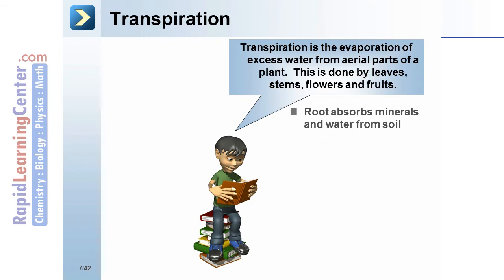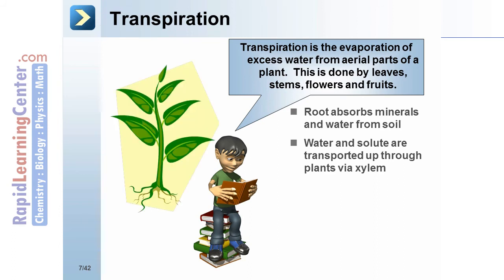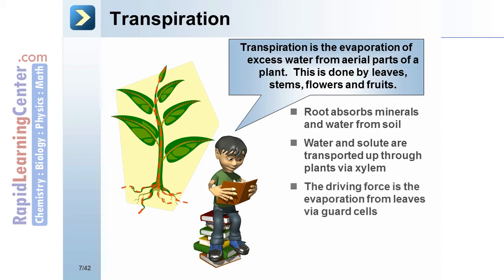Roots absorb minerals and water from soil. Water and solutes are transported up through plants via the xylem. The driving force is evaporation from leaves via guard cells, which pulls water up from the roots. This process is called transpiration.